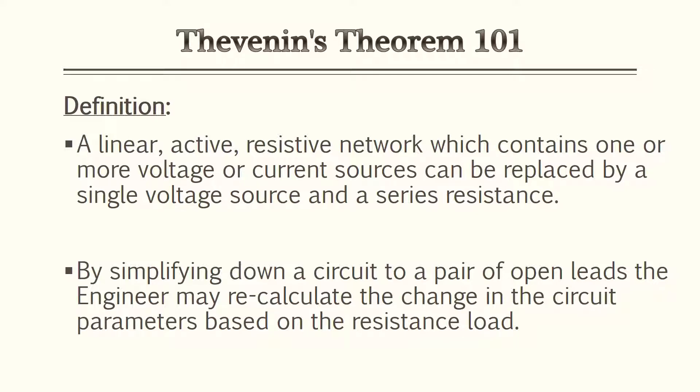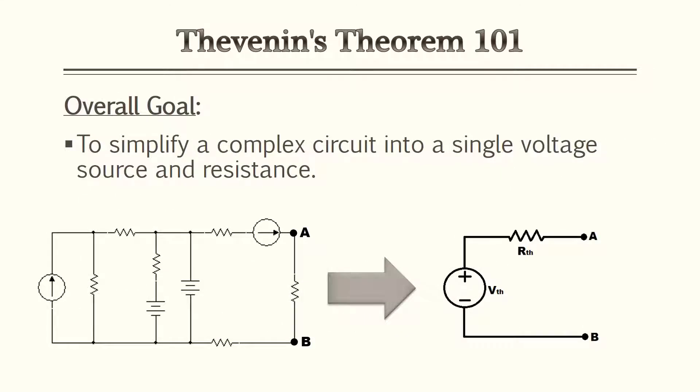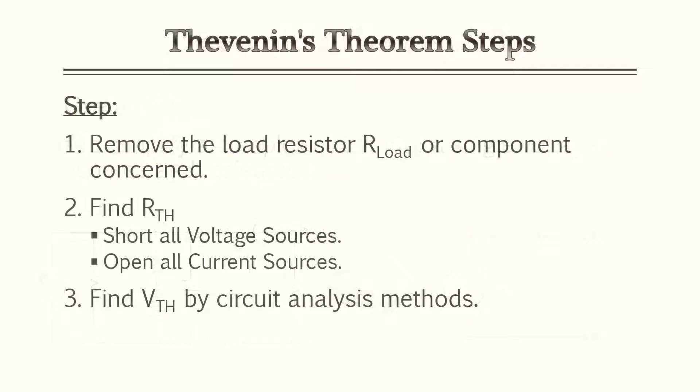The overall goal of Thevenin's Theorem is to simplify a complex circuit to a very simple single voltage source and resistor in series. That way you can measure parameters like, for example, the current of a load between points A and B, or wherever the points you pick on a circuit.